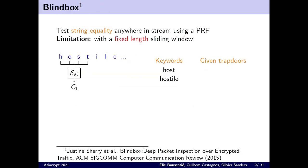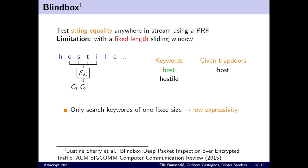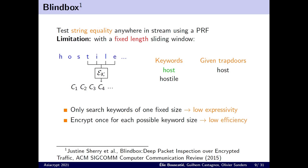In 2015, Blindbox showed that it was possible to search a string in a stream using pseudo-random functions, but with a very strong limitation. Encryption is performed at a string level using a fixed length sliding window. For instance, it is all the substrings of four consecutive letters that will be encrypted. This will only allow the receiver to give trapdoors for keywords of length 4, like the keyword 'host', but not the keyword 'host style'. As such, the expressivity is very limited. One solution would be to encrypt the stream once for every possible pattern length, but we have seen that there are many different lengths of patterns, so this would be inefficient.